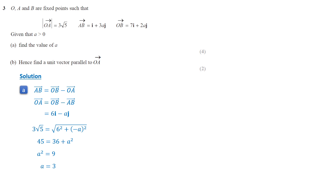The unit vector parallel to vector OA is found by dividing vector OA by its length. Simplifying, we get 2 over root 5 times i minus 1 over root 5 times j, which is the unit vector parallel to vector OA.